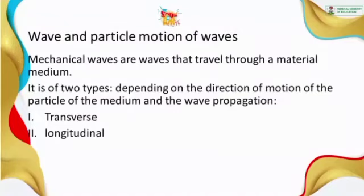We also have wave and particle motion of waves. Mechanical waves are waves that travel through a material medium. Don't forget — sound needs a medium to be propagated, so these are called mechanical waves. There is actually a mechanical wave behind this that helps waves travel through a material medium to produce sound. We have two types of mechanical waves, depending on the direction of motion of particles or the medium of wave propagation when it comes to sound. We have the transverse and the longitudinal — these are the types of mechanical waves.